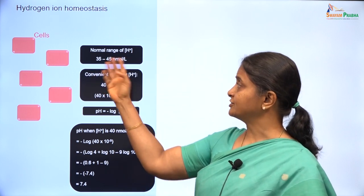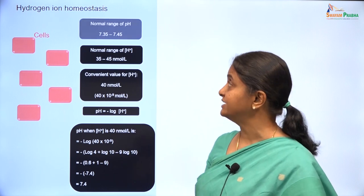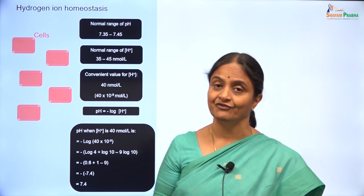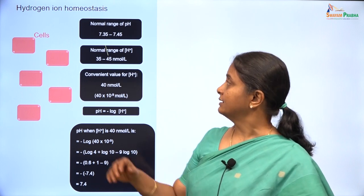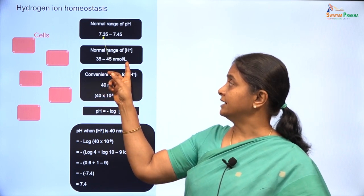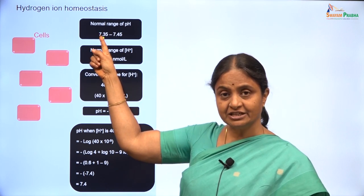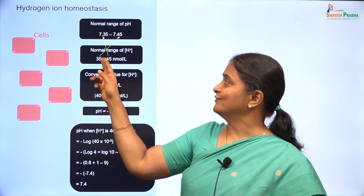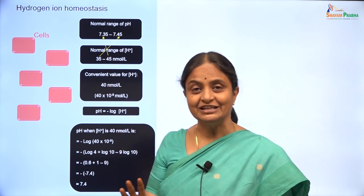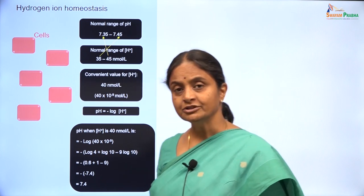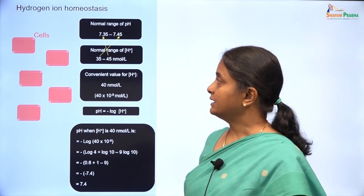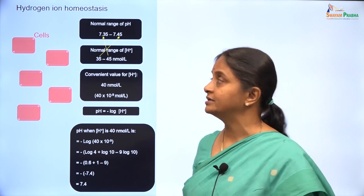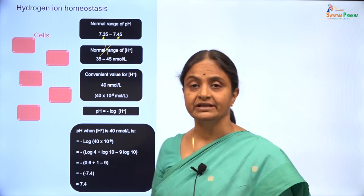For the range of 35 to 45 nanomoles per litre, the normal pH range would be 7.35 to 7.45. The higher the hydrogen ion concentration, the lower the pH because pH is the negative log. So the normal pH range in which cells can exist and their enzymes can function is 7.35 to 7.45.